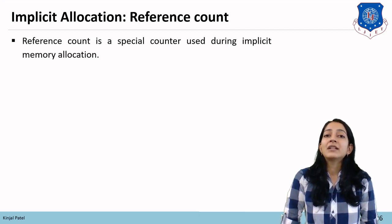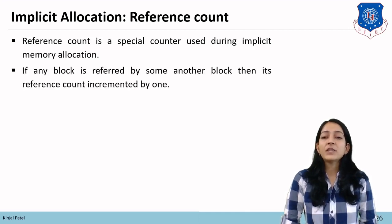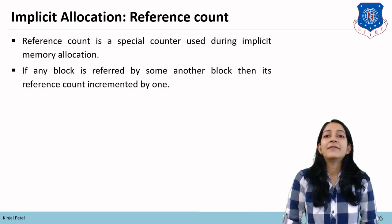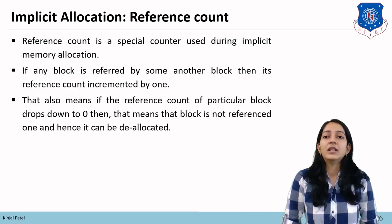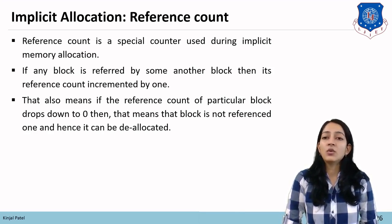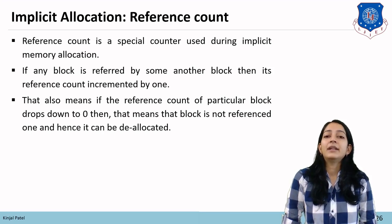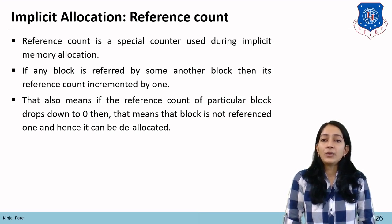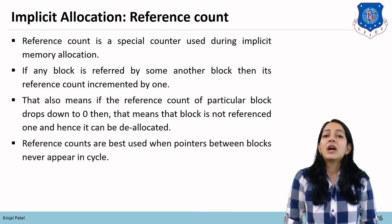The first technique in implicit allocation is reference counting. A reference count is a special counter used during implicit memory allocation. If any block is referenced by another block, its reference count is incremented by 1. If the reference count of a particular block drops to 0, that means the block is no longer referenced and hence it can be deallocated. Reference counts are best used when pointers between blocks never appear in a cycle.